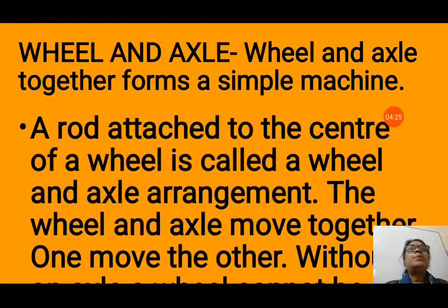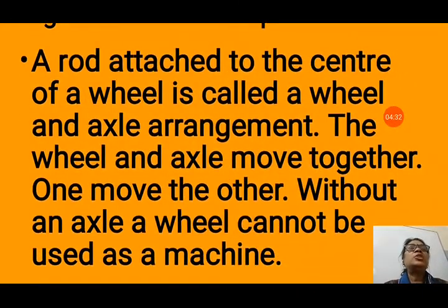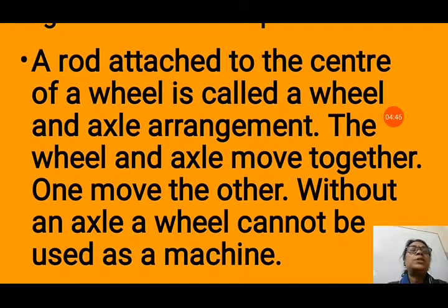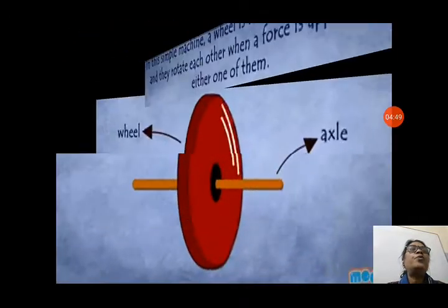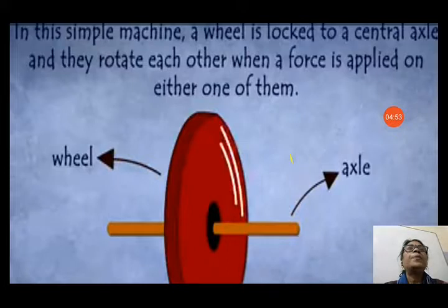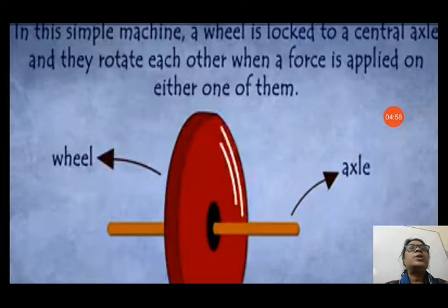Another simple machine is the wheel and axle. A wheel and axle together form a simple machine — a rod is attached to the center of the wheel, and they move together. Without an axle, a wheel cannot be used as a machine; without an axle the wheel cannot move freely. In this arrangement, a wheel is locked to a central axle and they rotate each other.